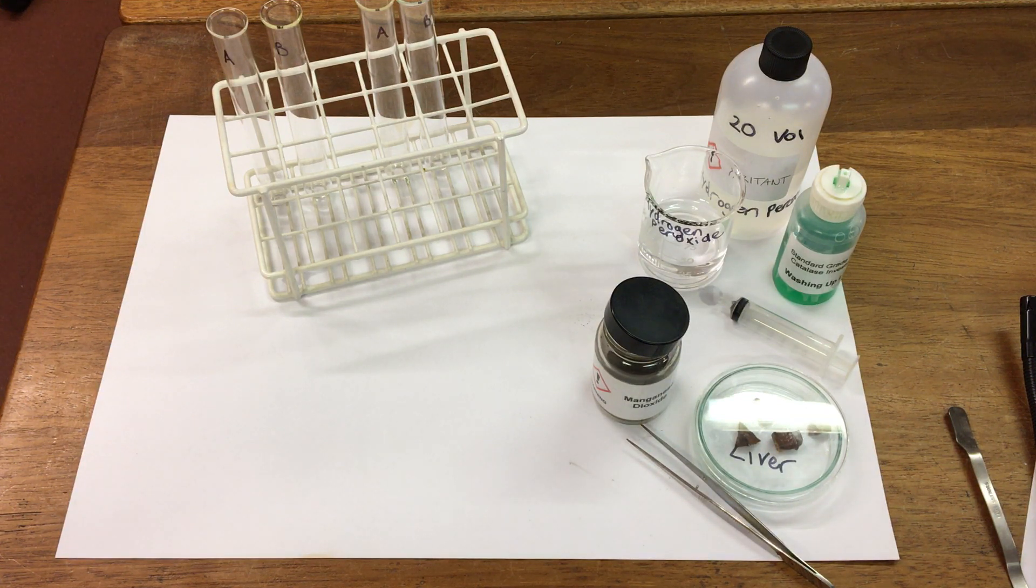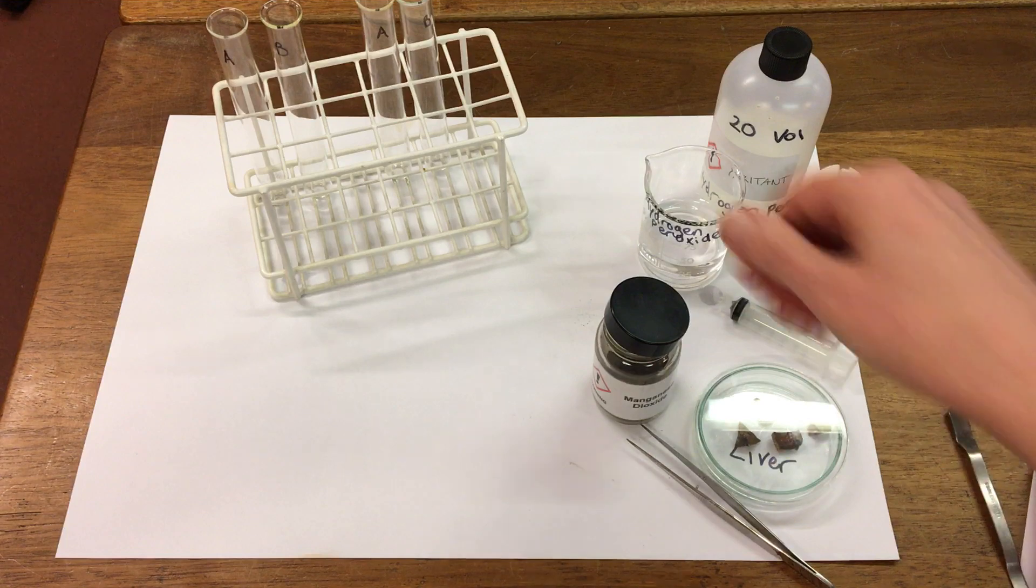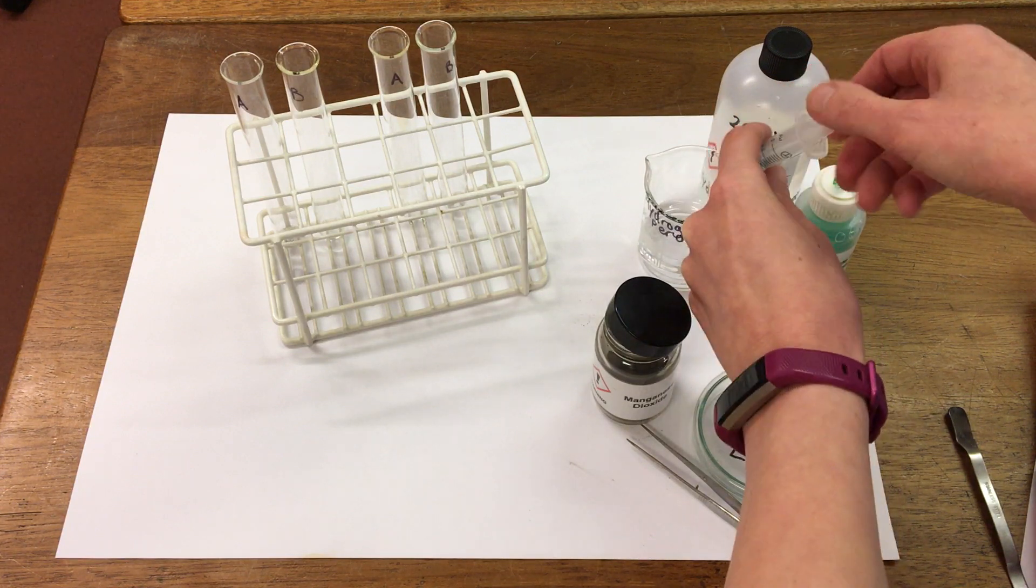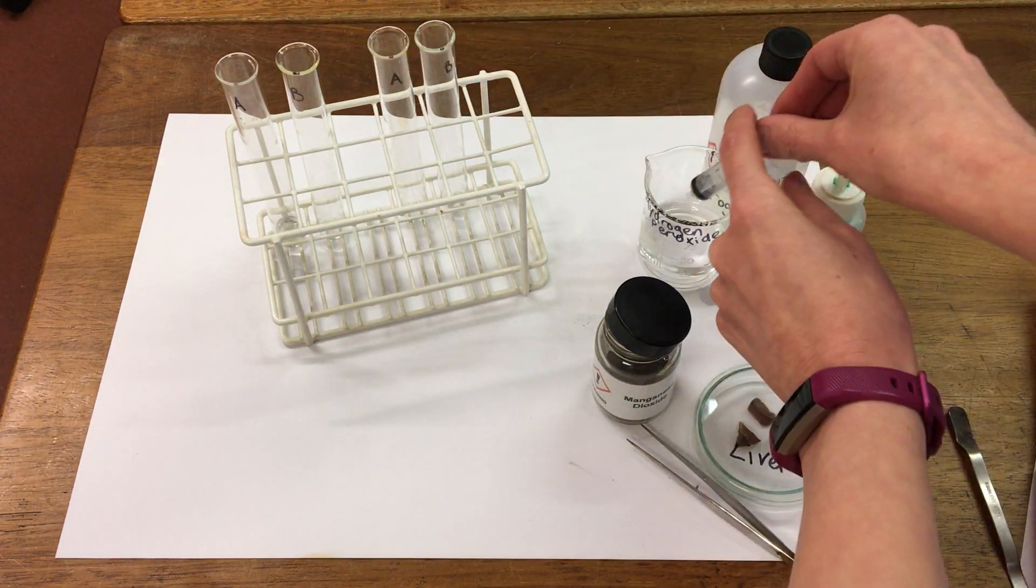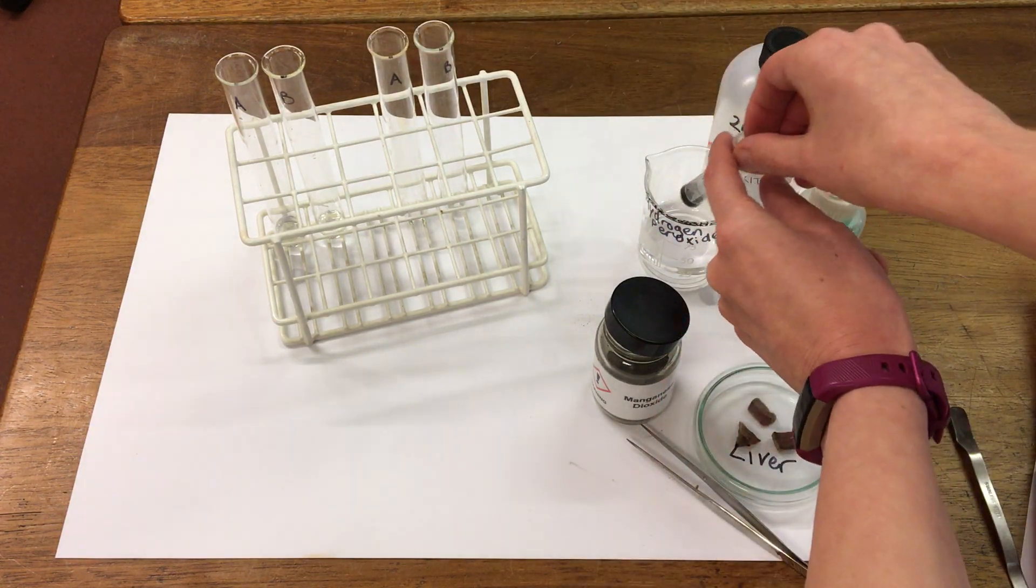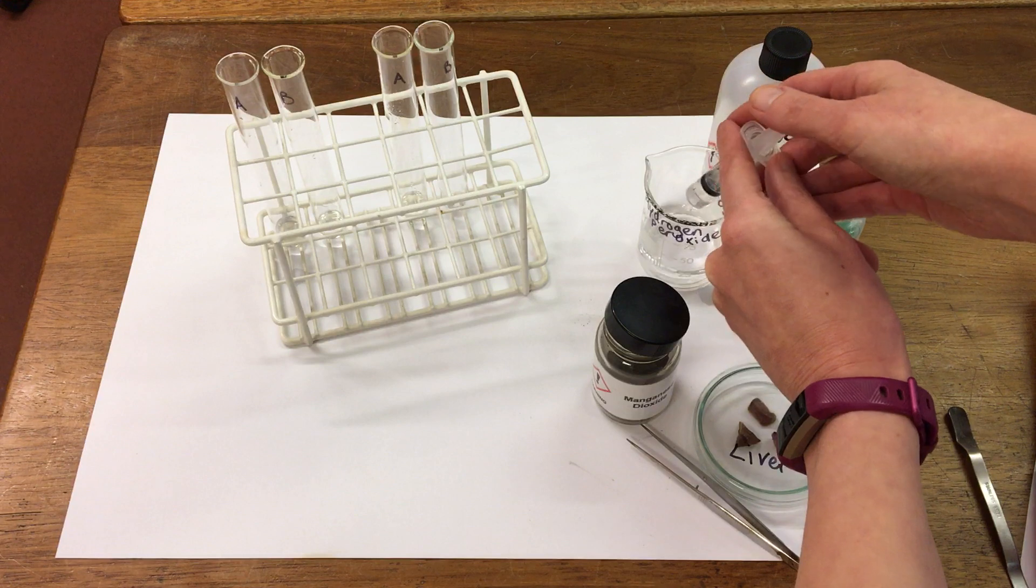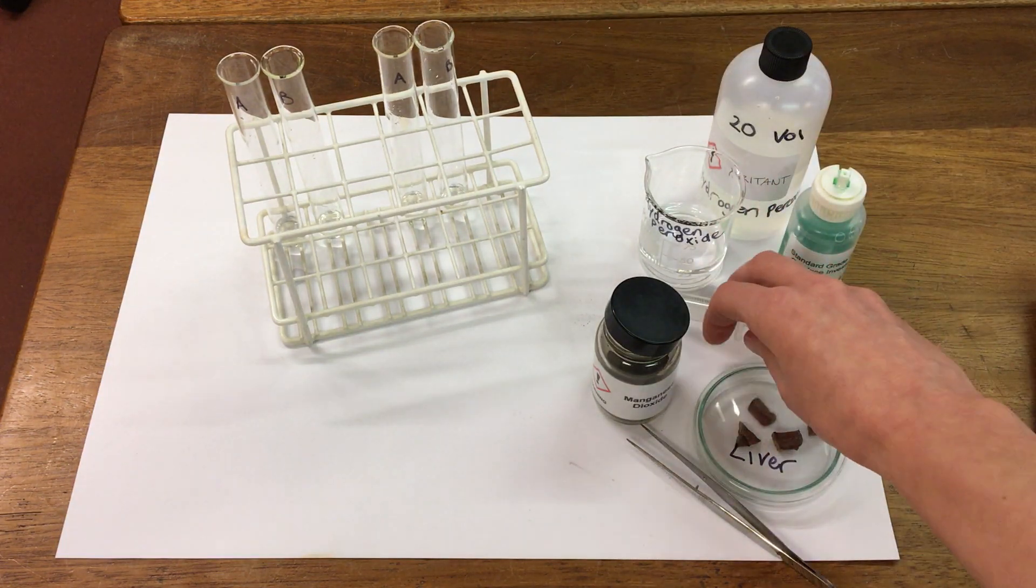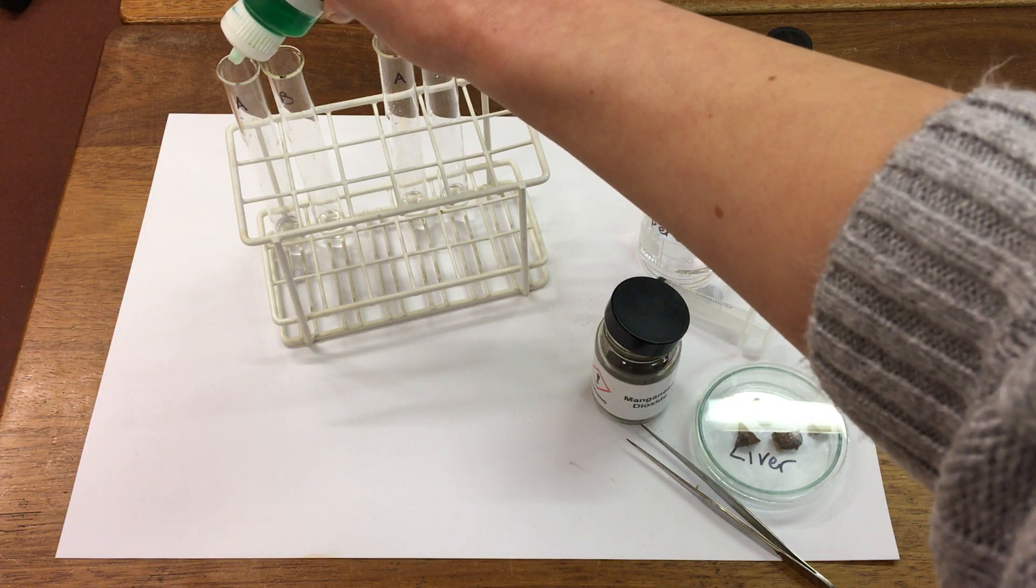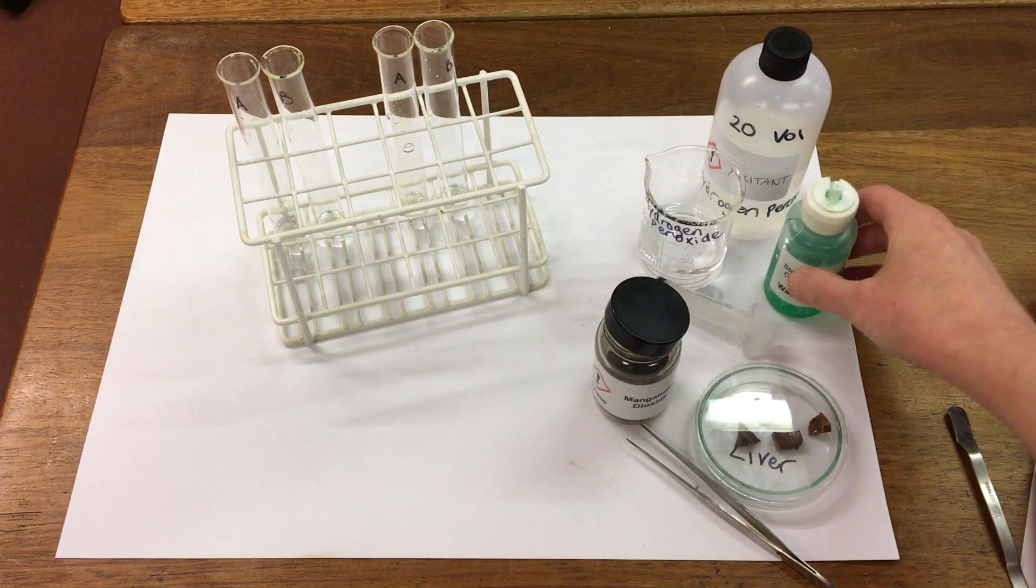If we want to measure the amount of gas being produced we can add detergent and this makes any gas that's produced show up as a foam. So we'll start again and we're going to add two mils of hydrogen peroxide to each of our test tubes. And then we're going to add two drops of detergent. And we'll gently mix the test tubes.